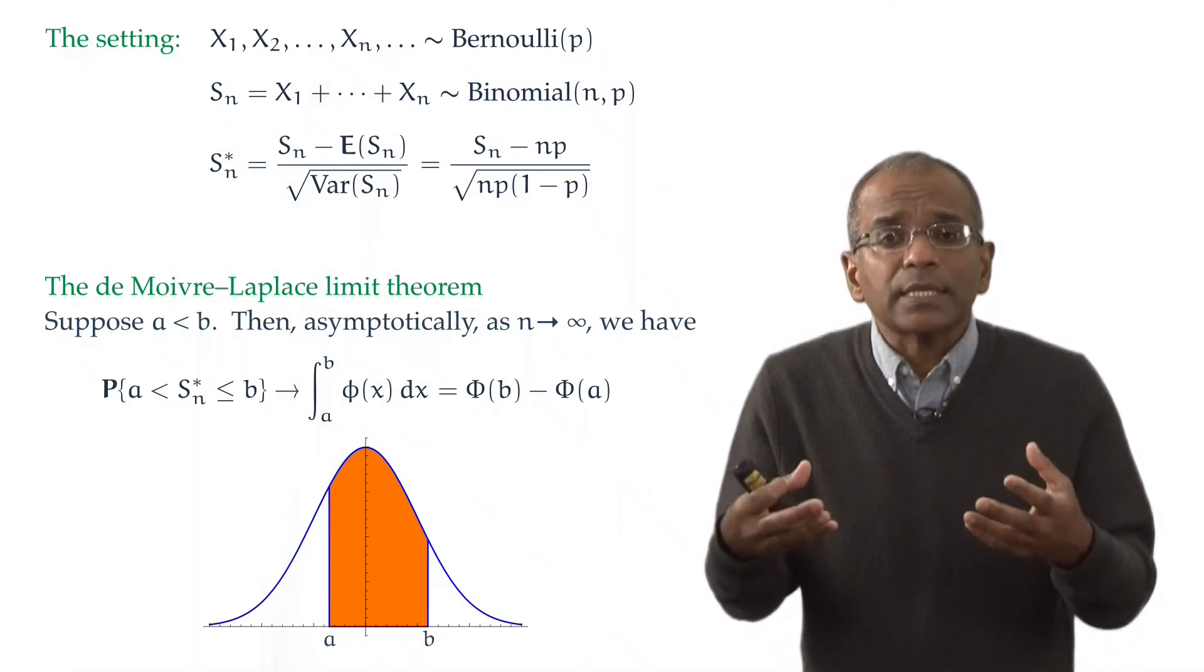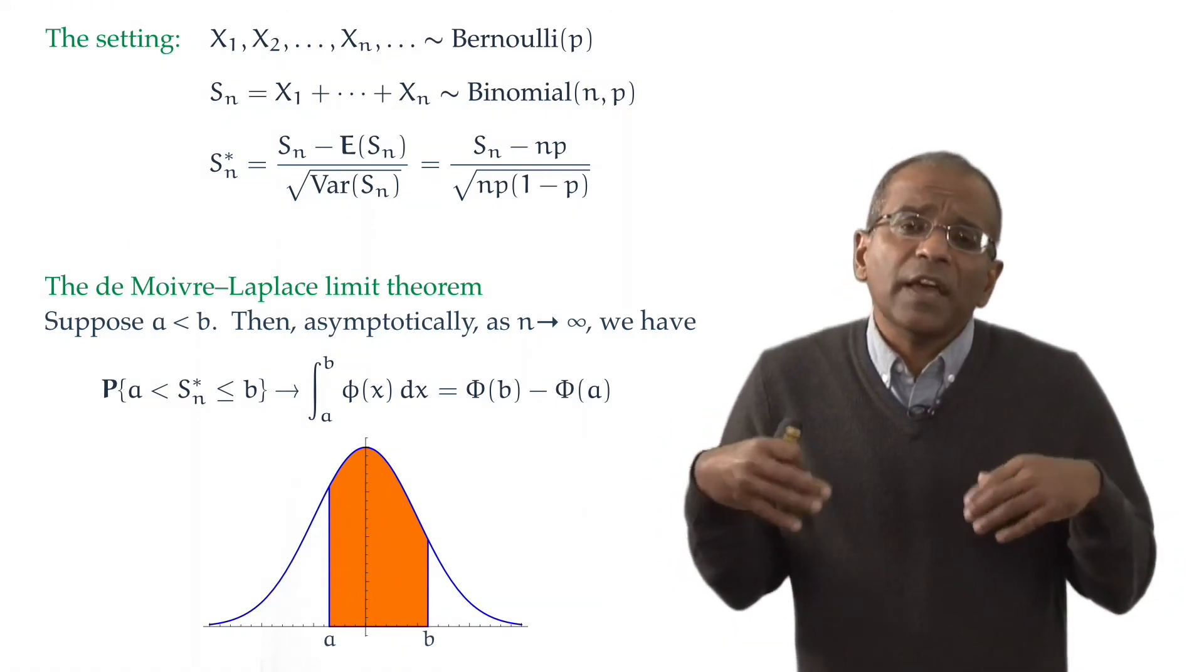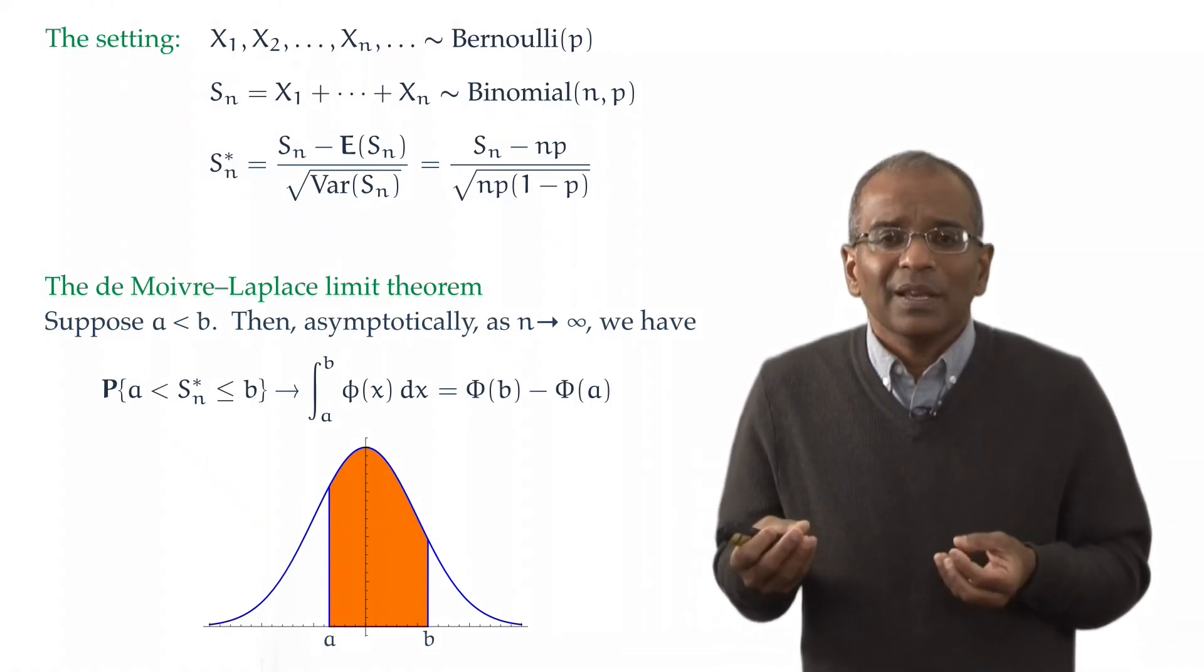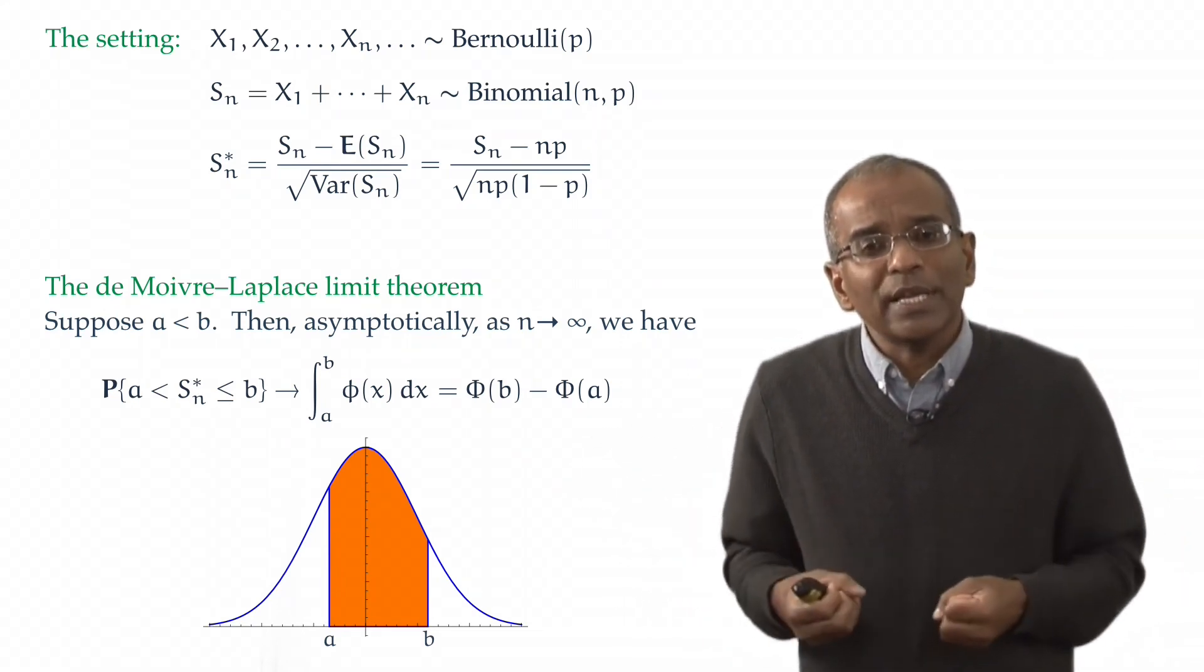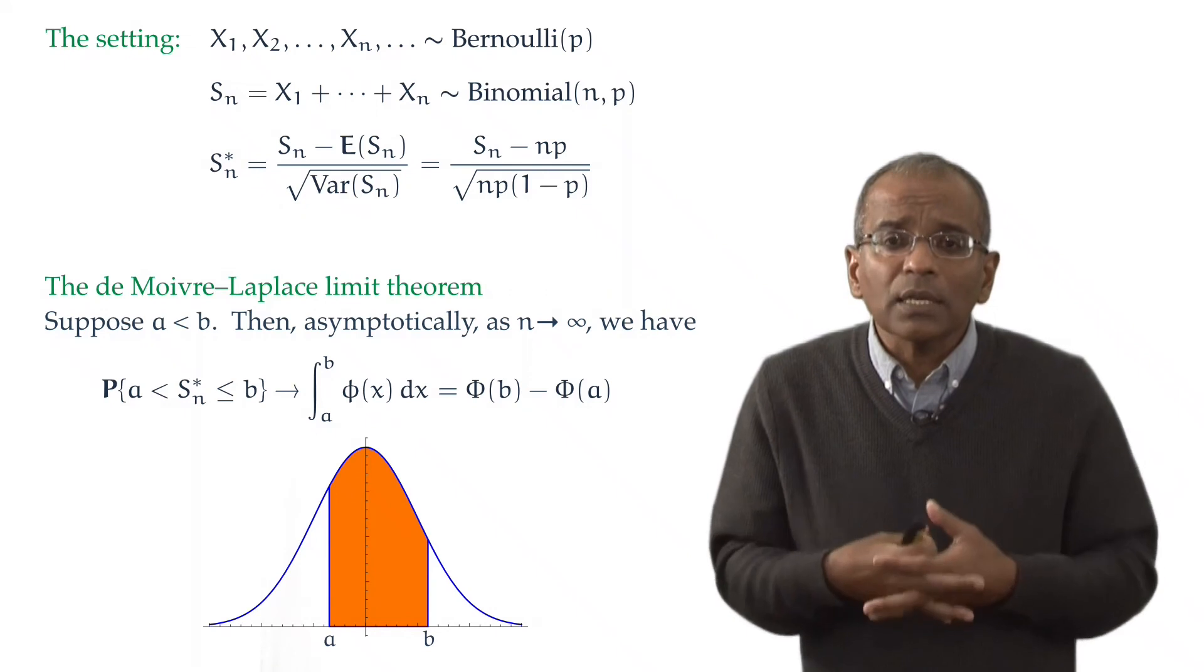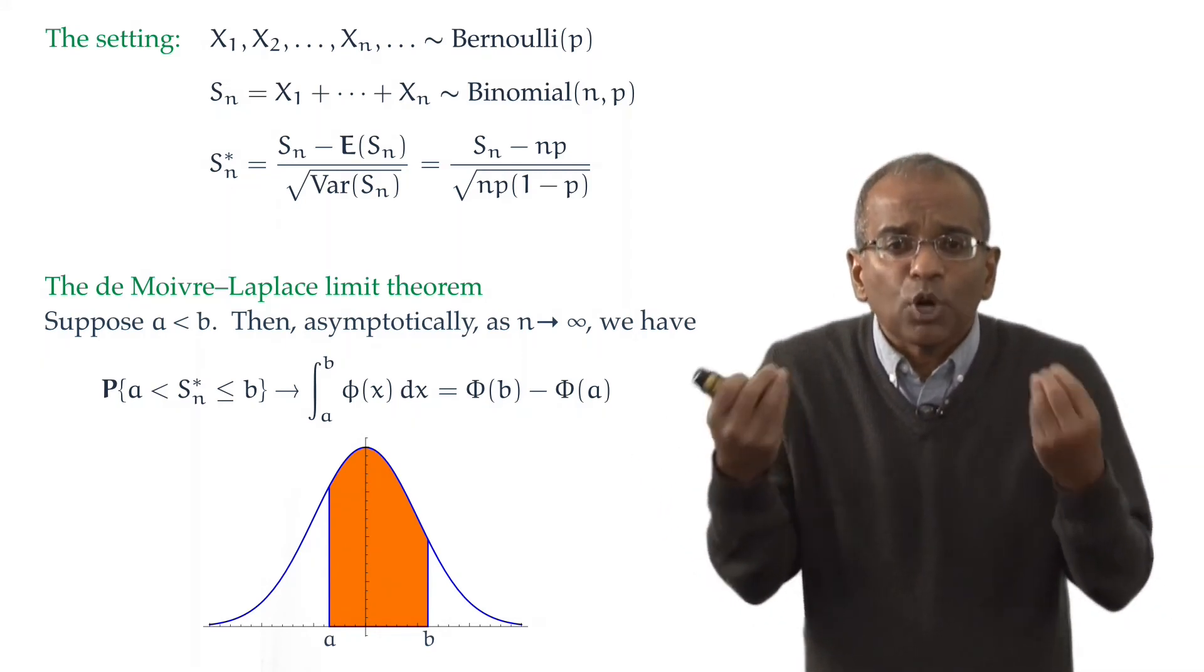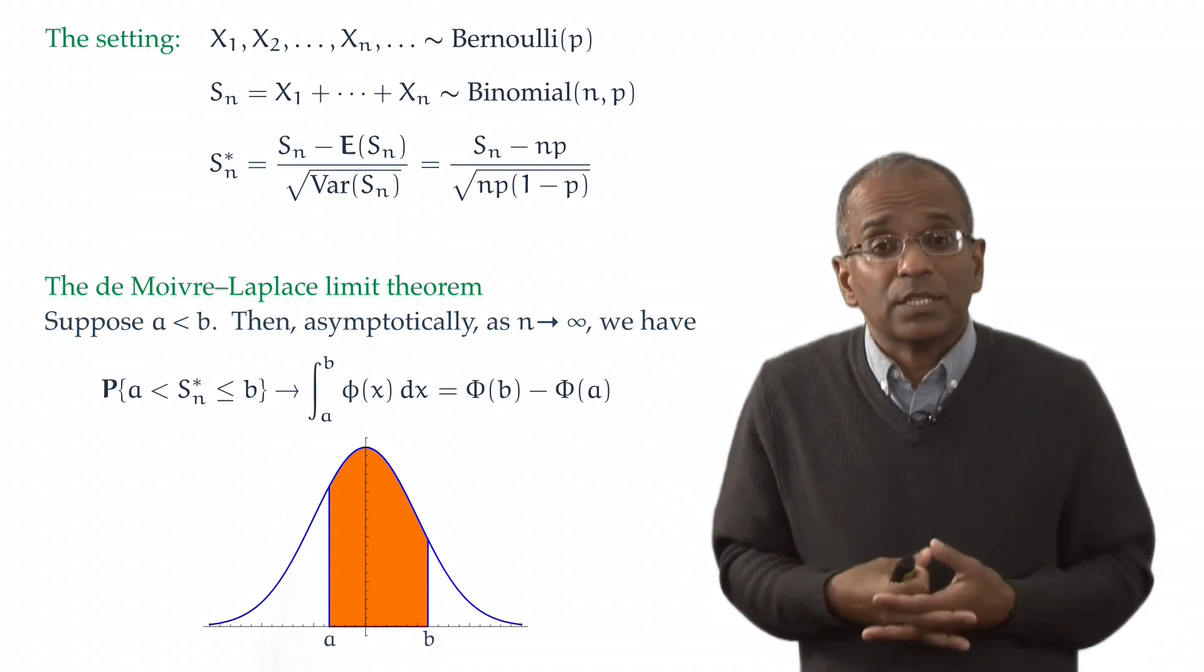The asymptotics in these settings kick in very, very, very fast. A typical rule of thumb is to say that if n is around 30, you already get very good approximations typically. It also depends upon how skewed the coin is. The closer the coin is to being fair, the quicker the approximation kicks in. The more skewed the coin is, the smaller p gets or the larger p gets, the more skewed the underlying binomial distribution and the longer it takes for the normal approximation to kick in. But even in extreme cases, generally the approximation kicks in very, very fast. By typically around 100, we should see very good fits to the underlying probabilities.